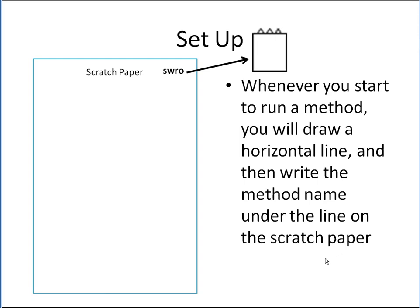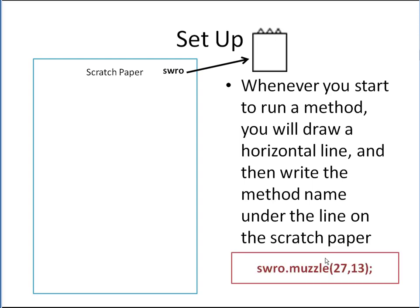Whenever you're going to start to run a new method, you're going to draw a horizontal line and then write the method name under the line on the scratch paper. So suppose we said SWRO.muzzle — we're running the muzzle method on the SWRO object with these parameters — so we draw our line and then write the name of the method, which is muzzle.